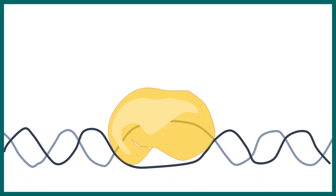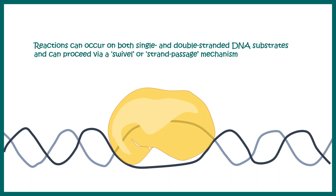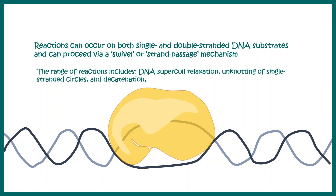Type 1 topoisomerase gives rise to a cut in one strand only, whereas type 2 topoisomerase cuts both strands, and after cutting proceeds by a swivel and strand passage mechanism. The range of reactions performed by these enzymes involves resolving DNA supercoils, unknotting of single-stranded circles, and decatenation.